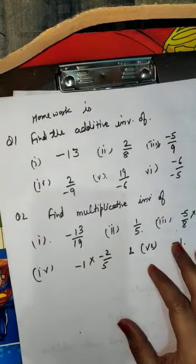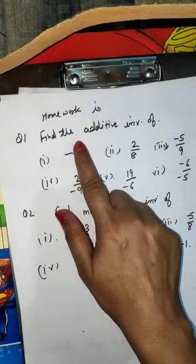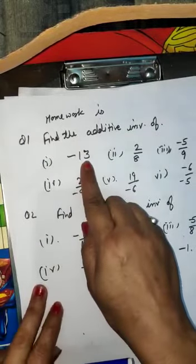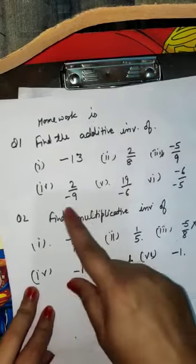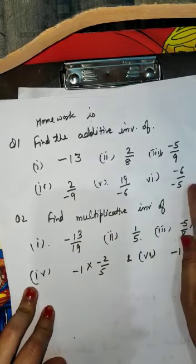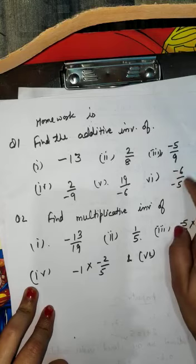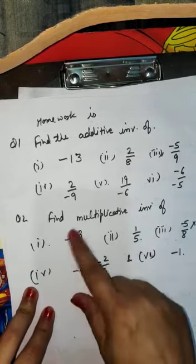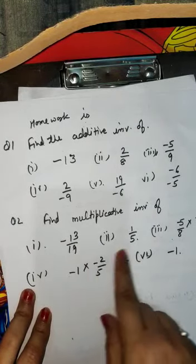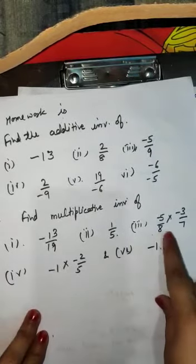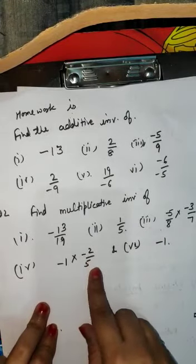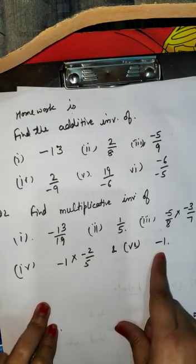Stay home, stay safe, and keep practicing. For homework: first question — find the additive inverse of: (1) minus 13, (2) minus 2 by 8, (3) minus 5 upon 9, (4) minus 2 upon 9, (5) 19 upon minus 6, (6) minus 6 by minus 5, which simplifies to positive 6 upon 5. Second question — find the multiplicative inverse of: (1) minus 13 upon 19, (2) 1 upon 5, (3) minus 5 by 8 into minus 3 by 7, (4) minus 1 into 5, (5) minus 1. Thank you.